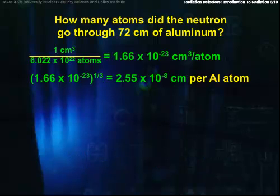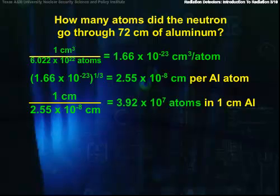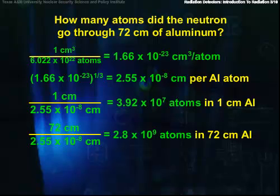Let's let the atoms be contained inside of cubes, so the diameter of a single aluminum atom is the cube root of this number, or 2.55 times 10 to the minus 8th centimeters. If we lined all these atoms up, then a neutron would pass through 3.92 times 10 to the 7th atoms per centimeter, or about 2.8 billion atoms in 72 centimeters.